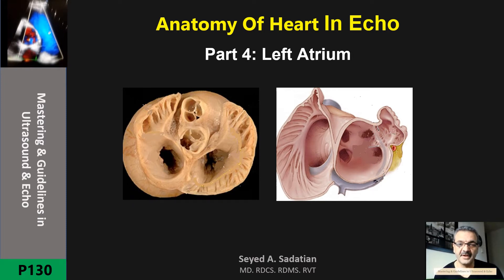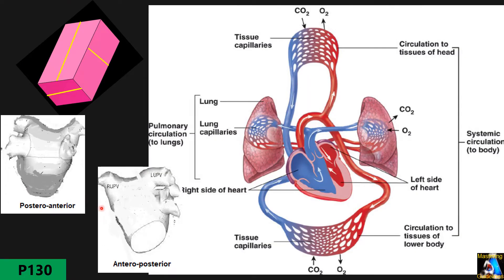Welcome to Mastering and Guide Learning Ultrasound and Echo. The left atrium is the most posterior-superior chamber of the heart. It accepts oxygenated blood from the lungs through the pulmonary veins and drains it to the left ventricle. In 2D, the shape of the left atrium looks like a rectangle, and in 3D it is cuboidal.